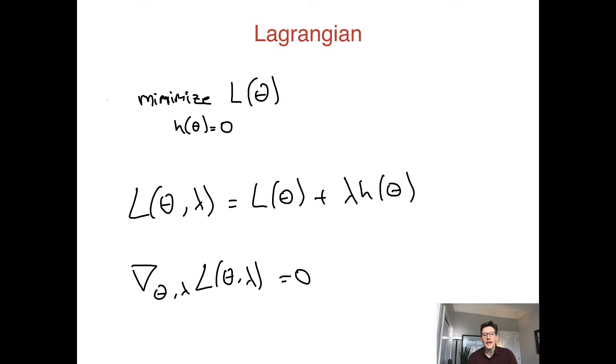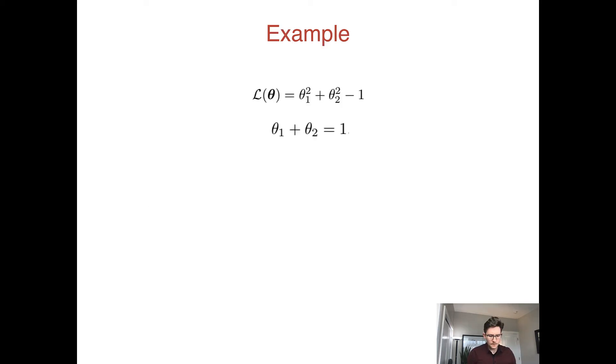That lets us analytically find a solution to constrained optimization problems where often it would be difficult otherwise. To show why this is helpful, let's do an example. Let's look at the following: we want to minimize this loss function, θ₁² + θ₂² - 1, subject to the constraint θ₁ + θ₂ equals one.